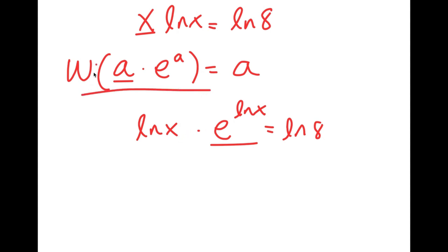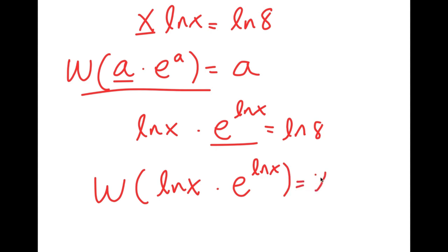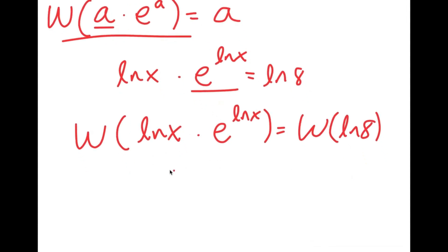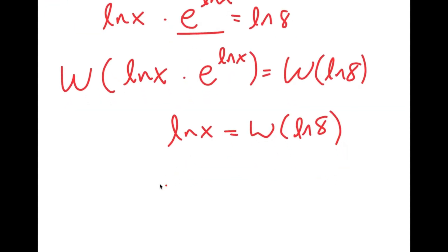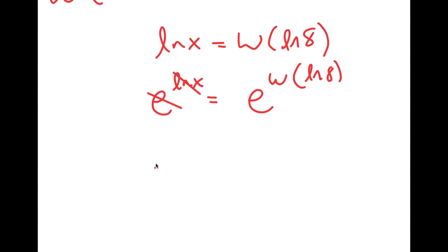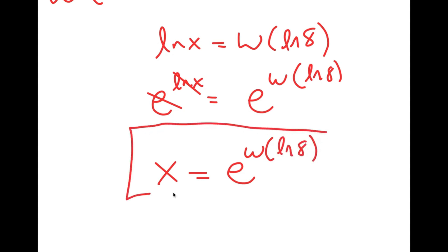So now I can use this formula. I'm going to take the W on both sides. So I have W of ln x times e to the power of ln x is equal to W of ln 8. This simplifies so that ln x is equal to W of ln 8. Then I'm going to take e to the power of both sides. So e to the power of ln x is equal to e to the power of W of ln 8. And e and ln cancel out, so I get x is equal to e to the power of W of ln 8. So this is my value of x.